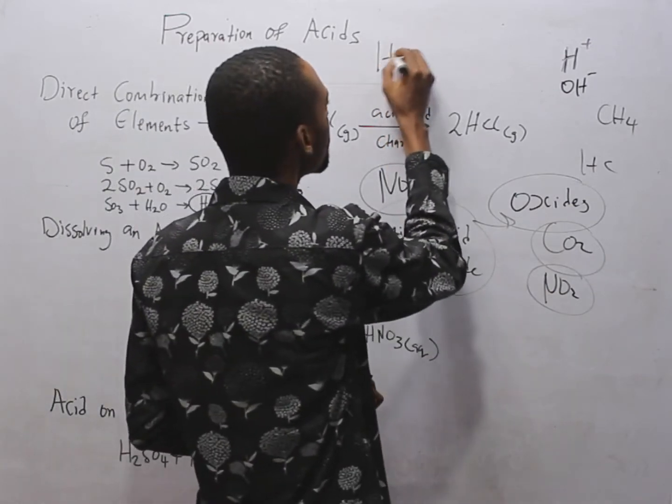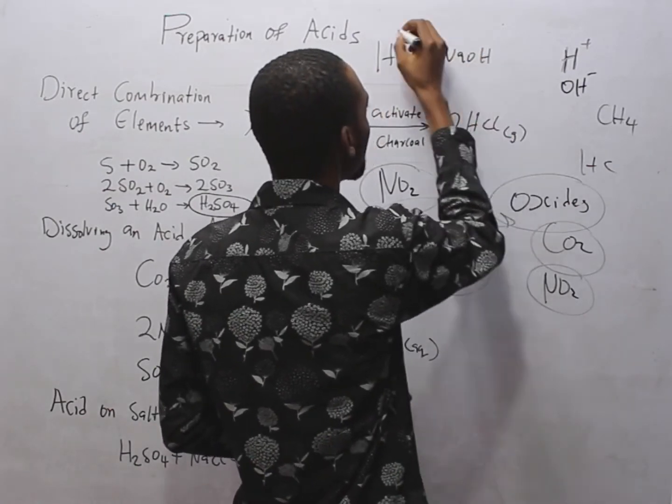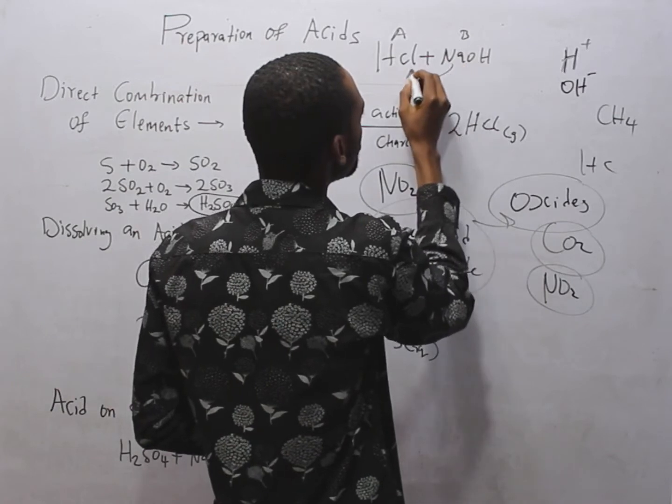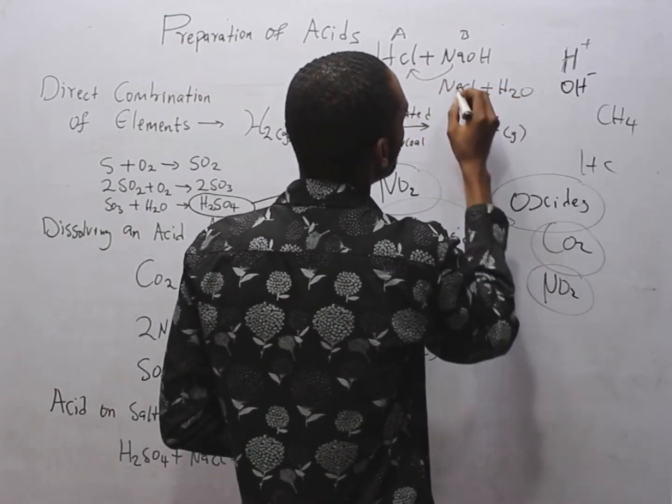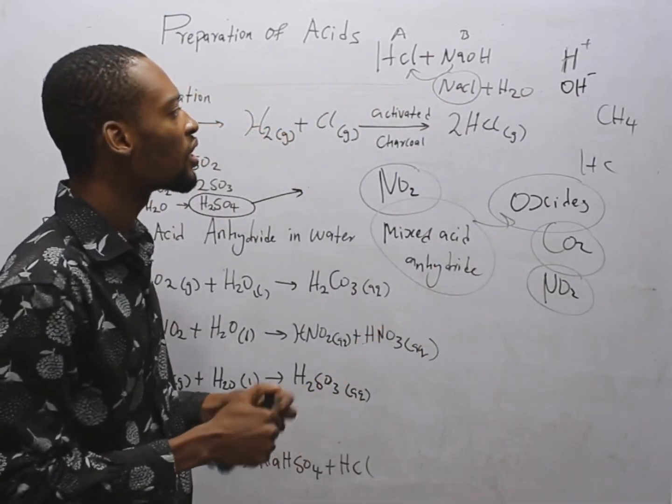Let's say HCl reacts with NaOH. Acid, base. It forms sodium chloride, NaCl plus H2O. This is a salt, neutral salt or a common salt.